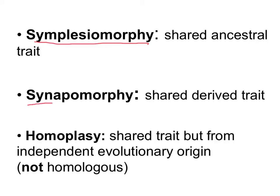The second trait is a synapomorphy, which is also a trait that we inherited from a common ancestor, but it's a derived trait. The word derived means it's newer — a newer version of a trait. So that means it's a trait that is unique to that group.